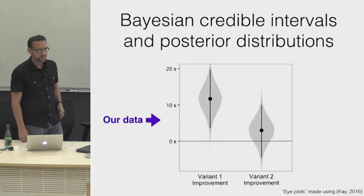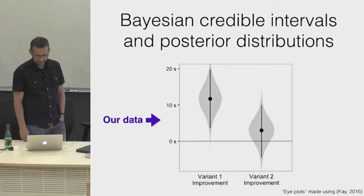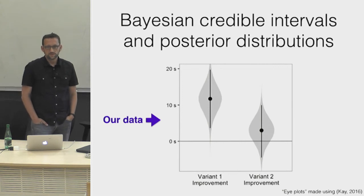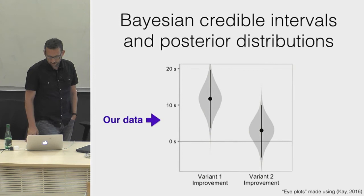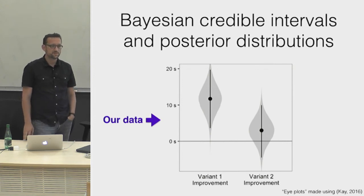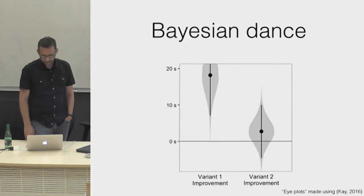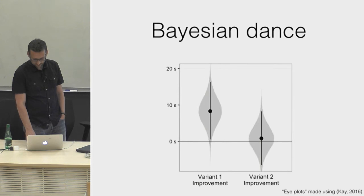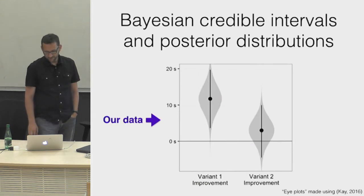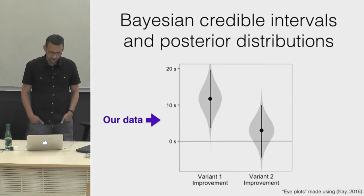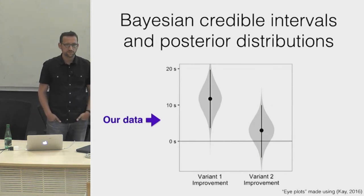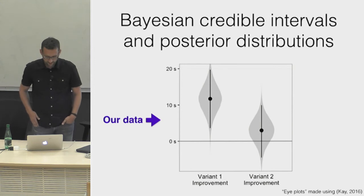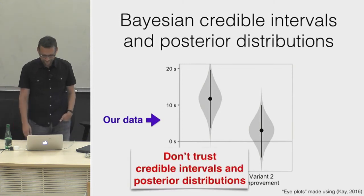Just in case you thought Bayesian statistics could save us — it's not really the case. These are Bayesian credible intervals and posterior distributions for the same data with weakly informed priors. They are quite similar to the 95% confidence intervals, which is often the case in simple situations, and they dance just as much. Posterior distributions are really useful because they let you interpret your data in a more nuanced way, but you shouldn't trust them more than the rest.